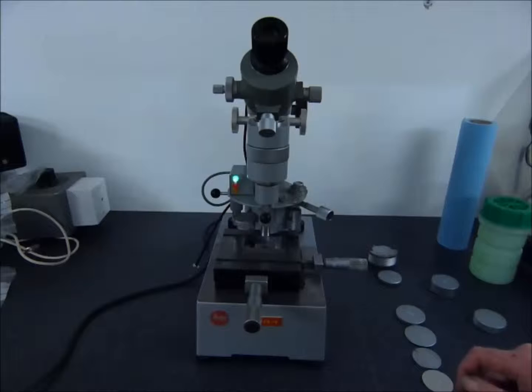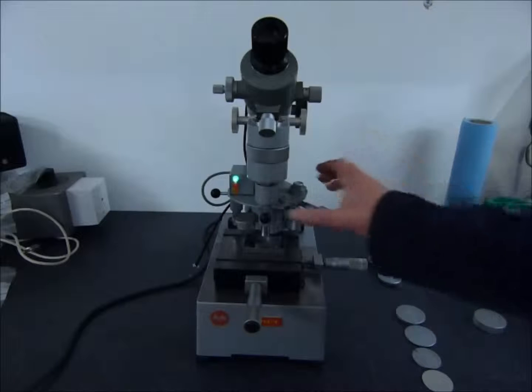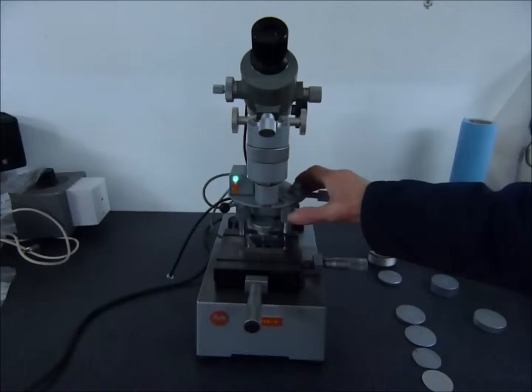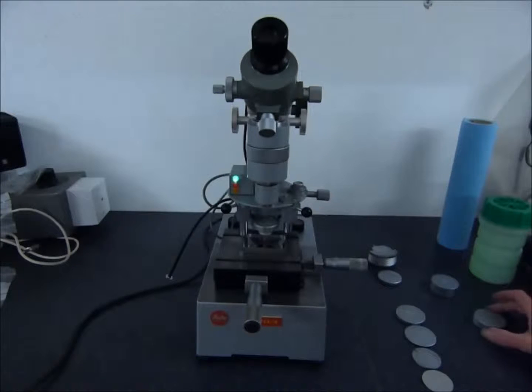You select the low power objective. Looking through the eyepiece you then look for a clear area on your sample. Then we rotate the carriage until the indenter is in position.